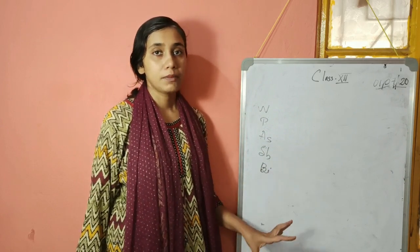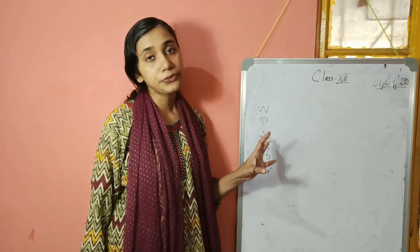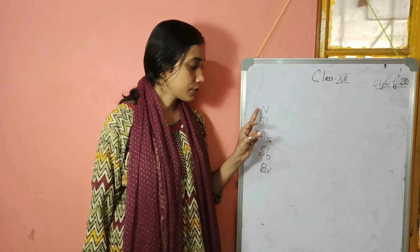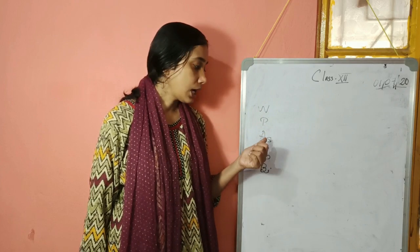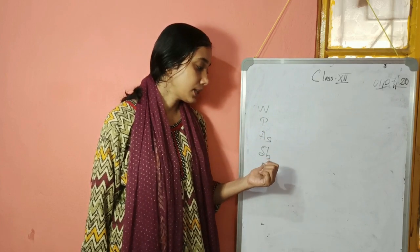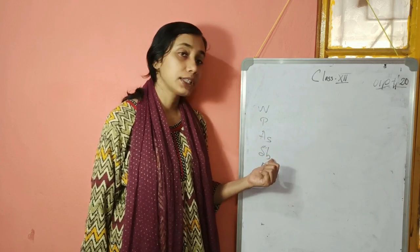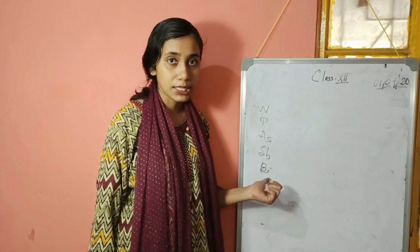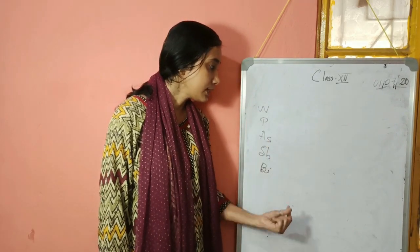Group 15 contains all three kinds of elements. Nitrogen and phosphorus are non-metals. Arsenic and antimony are metalloids, and bismuth is a metal. This group is unique in containing non-metals, metalloids, and a metal.